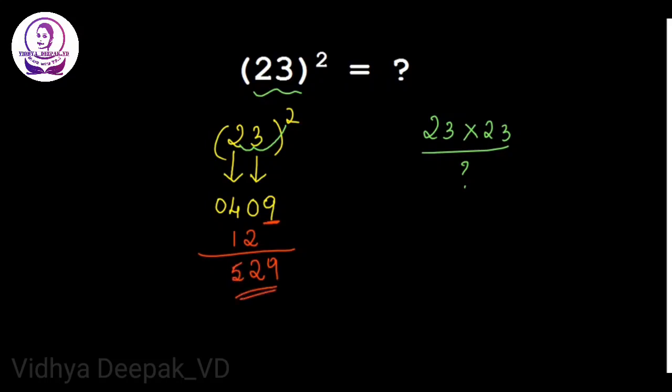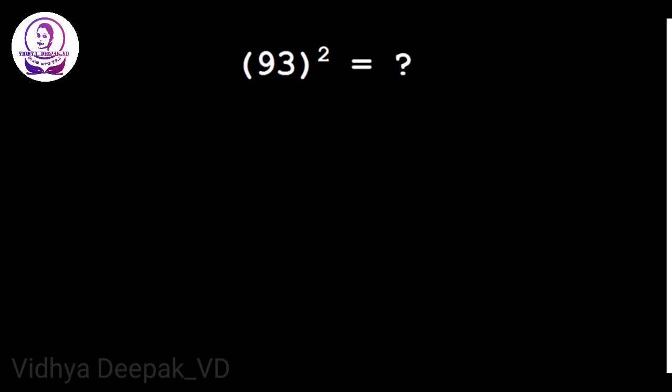Now let's get into our next problem: 93 square. So what is 3 square here? 9. So we have to write it as 09. What is 9 square? 9 times 9 is 81.